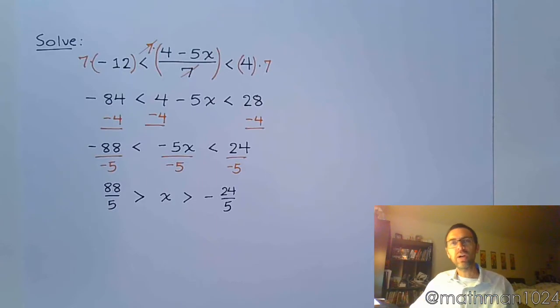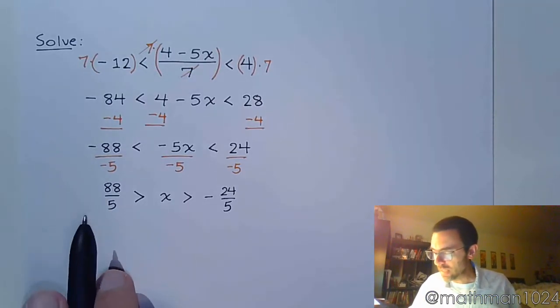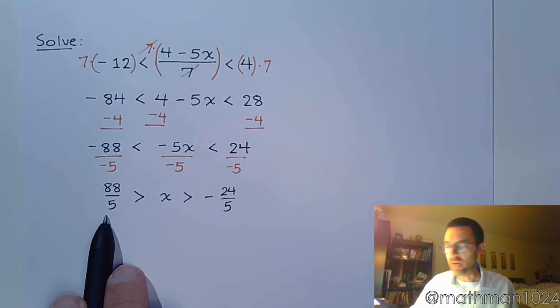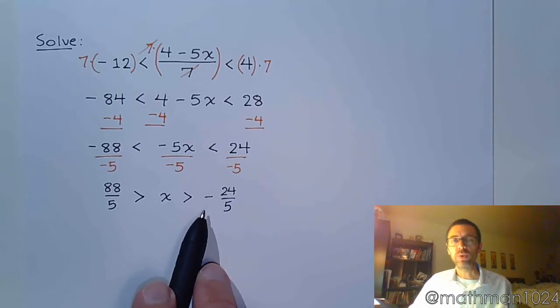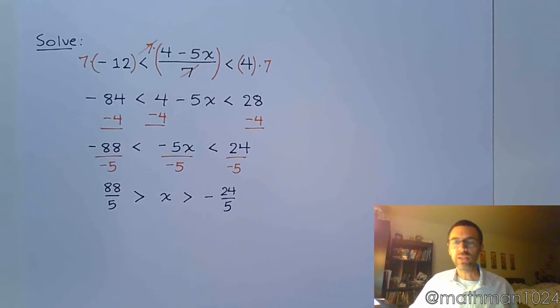So, with the flipping of the inequality signs, it still has to be true as we read this from left to right. Is positive 88 over 5 greater than negative 24 over 5? Yes, that's still a true statement.